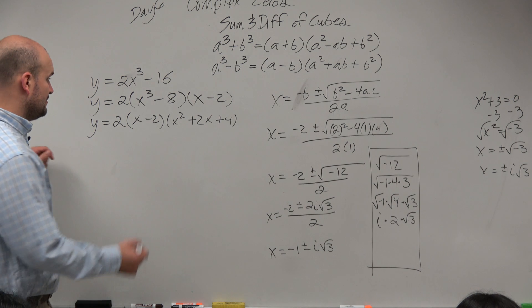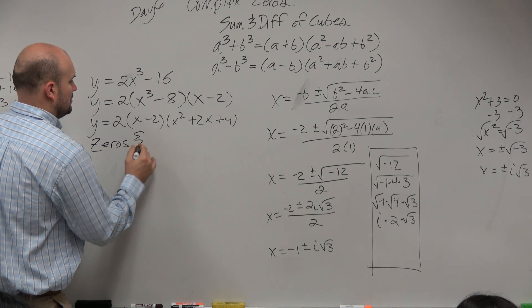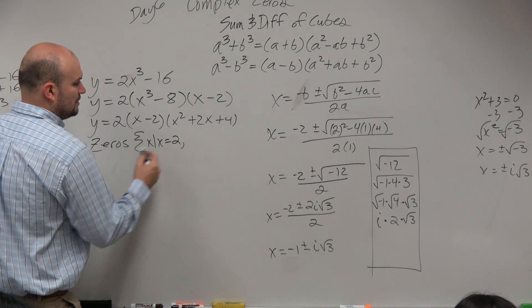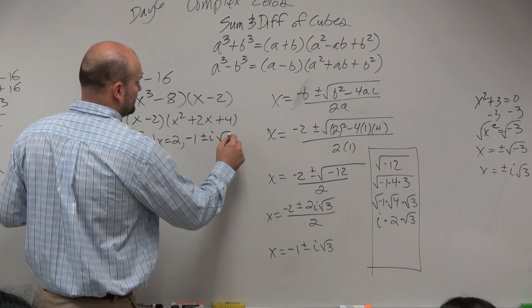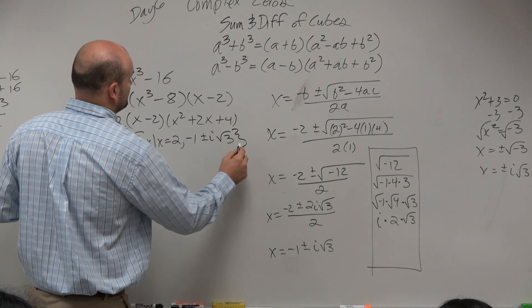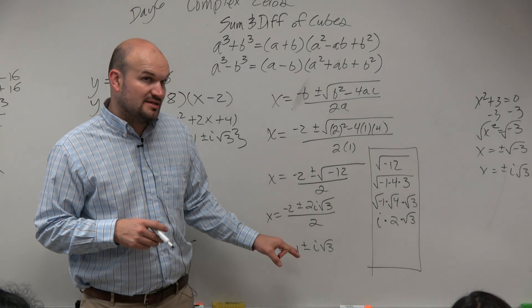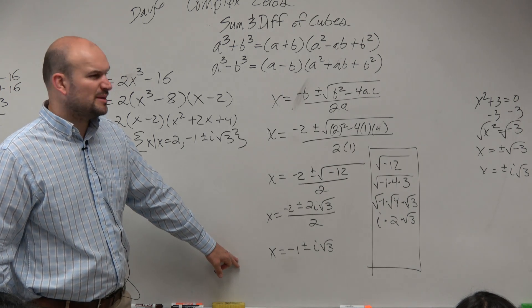So our zeros are going to be 2 and negative 1 plus or minus i square root of 3. Now, this is where a lot of students will usually get stuck is how to write the linear factorization here. This kind of gets a little bit confusing.